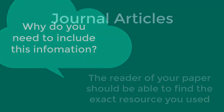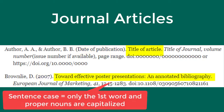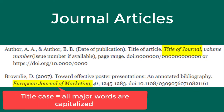Journal article citations follow this format: author last name, comma, first initial. If there are multiple authors, also include their names in the same format. After the author is the year of publication in parentheses, period. Then comes the title of the article in sentence case, the title of the journal italicized in title case, comma, the volume number still in italics.